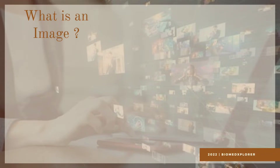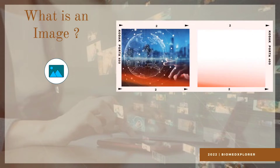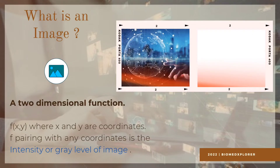Now, what is an image? An image is defined as a two-dimensional function, also defined in variables as f(x, y), where x and y are the coordinates and f is the intensity or gray level of an image. The amplitude of f pairs with any coordinates.